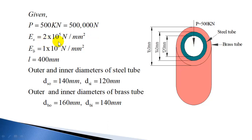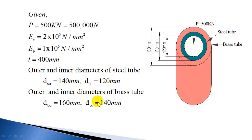Young's modulus of steel is 2 x 10^5 N/mm² and Young's modulus of brass is 1 x 10^5 N/mm². Length of the tube is 400 mm. Outside diameter of the steel tube is 140 mm and inside diameter of the steel tube is 120 mm. Similarly, for the brass tube, the outer diameter is 160 mm and inside diameter is 140 mm.